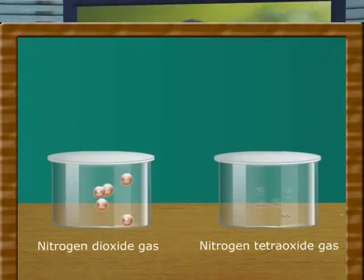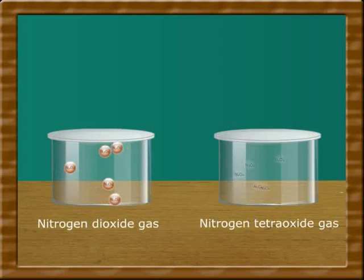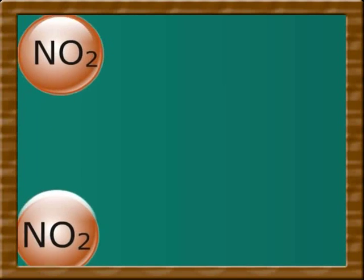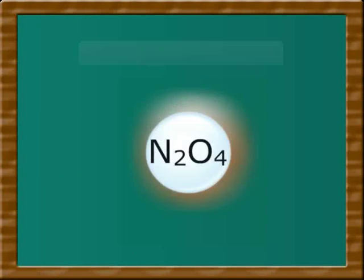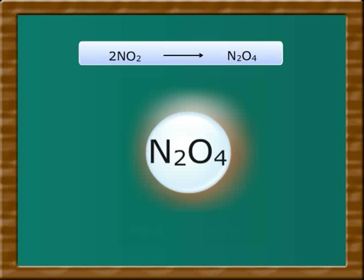Let us understand the effect of pressure on the state of equilibrium. Nitrogen dioxide is reddish-brown gas and nitrogen tetraoxide is a colorless gas. Two molecules of nitrogen dioxide react with each other to give one molecule of nitrogen tetraoxide.